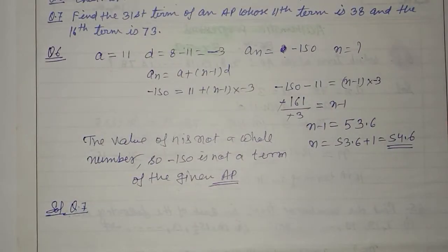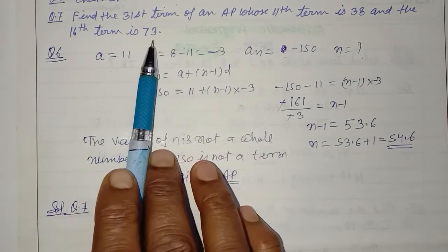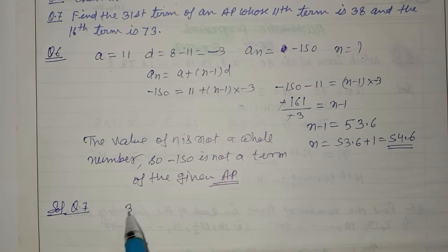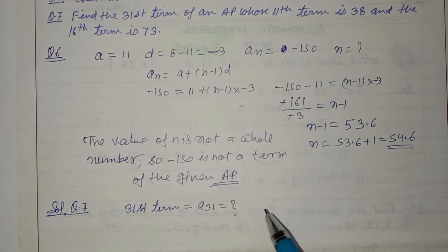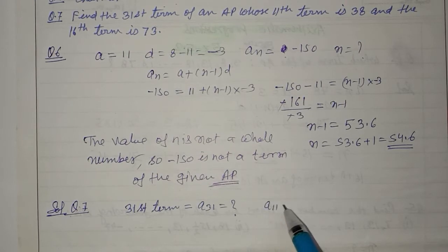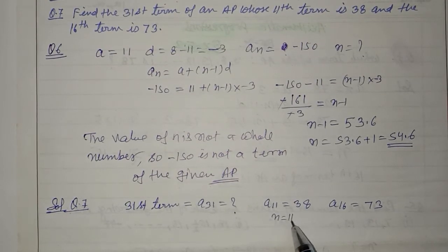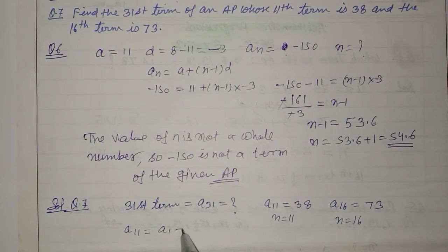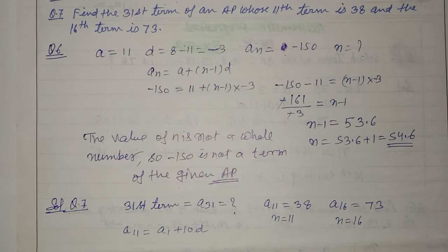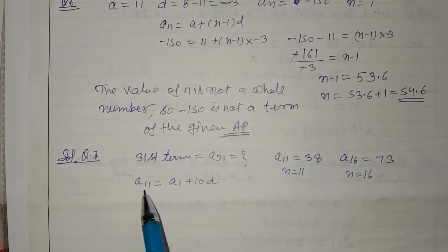Solution of question number 7: Find the 31st term of an AP whose 11th term is 38 and the 16th term is 73۔ Students ہمیں a31 find کرنا ہے۔ a11 دیا ہے 38 اور a16 دیا ہے 73۔ a11 is equal to a1 plus 10d، کیونکہ an equals a plus n minus 1 into d، اور اگر یہاں 11th term ہے تو 10d آئے گا۔